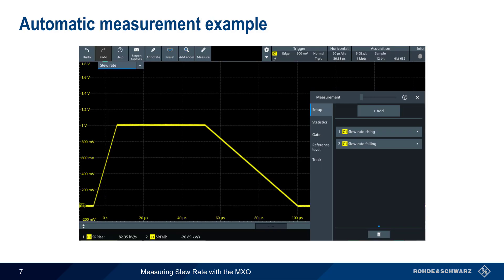In this example we've added both rising and falling slew rate to our automatic measurements. These values are then automatically calculated for the current acquisition and are displayed at the bottom of the screen. Here we see a rising edge slew rate of 82.35 kilovolts per second, and a much slower falling edge slew rate of minus 20.89 kilovolts per second.